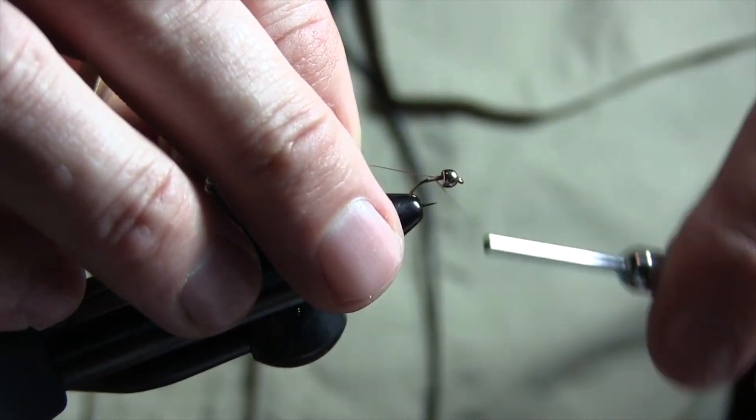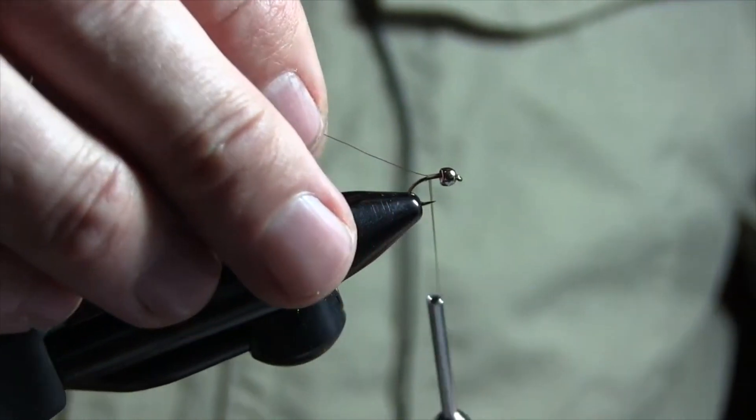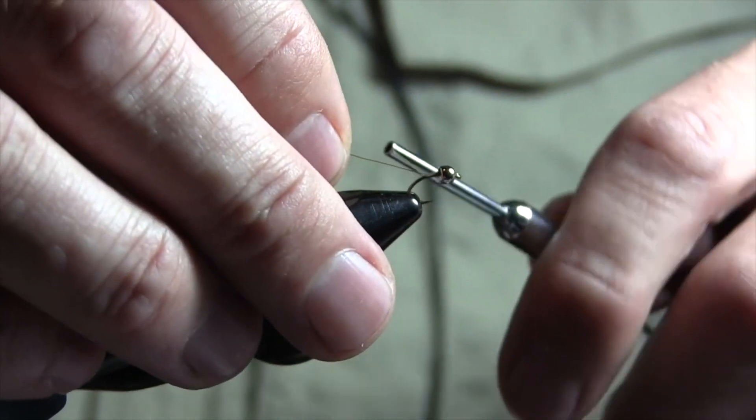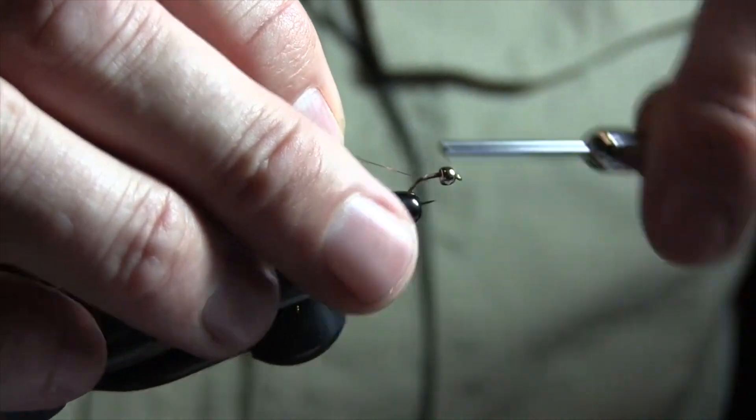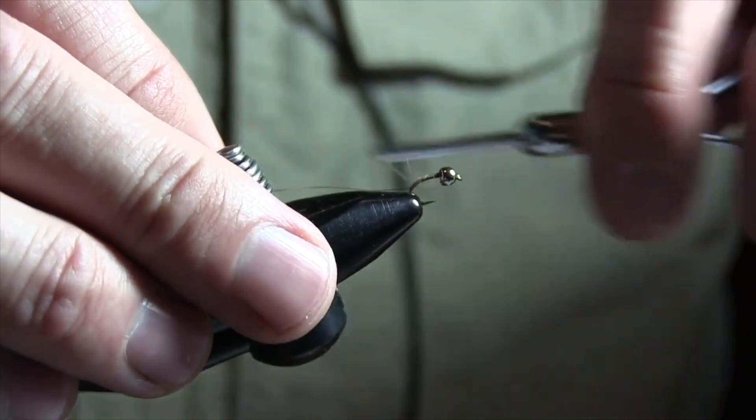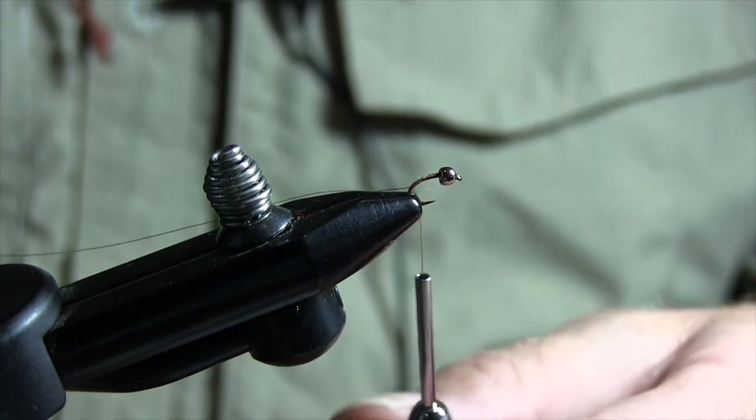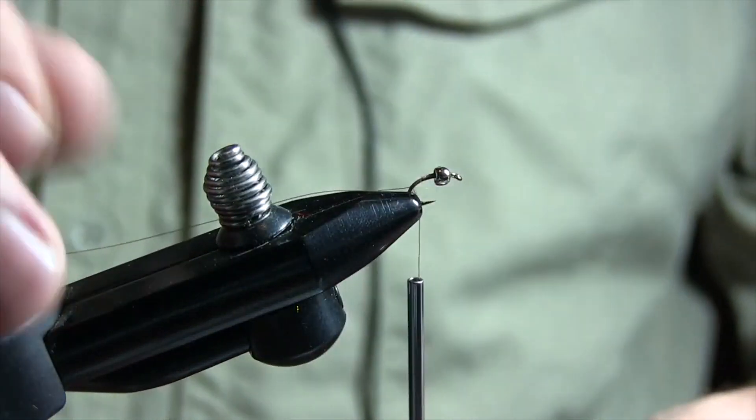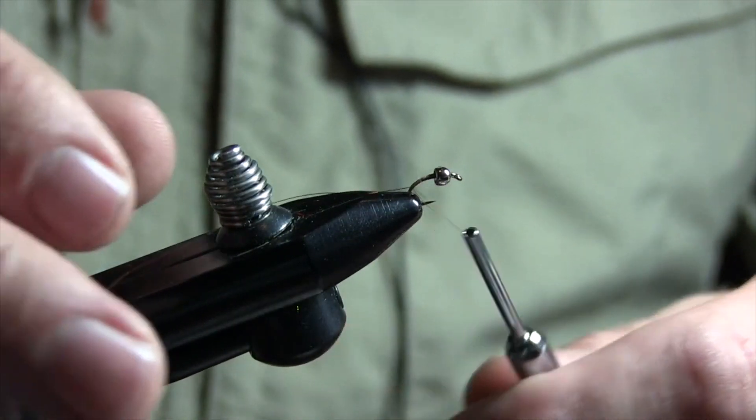So what we're gonna do here guys - this will work for a midge and I think it'll also work really well for the Mother's Day caddis when they are coming. You're gonna use copper wire, extra small copper wire. My thread's already starting to come apart. For a rib, I don't worry about a tail with these guys.